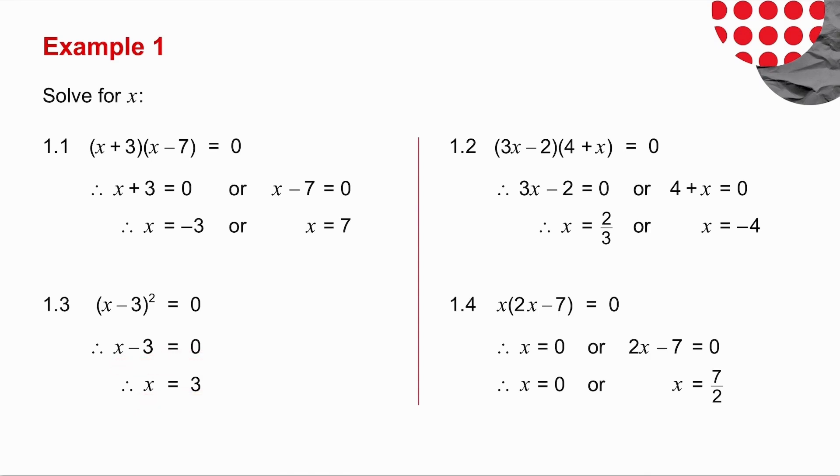In 1.4, it looks different in that I don't have two brackets, but I still have x times a bracket. And how do I get the product of two factors to equal 0? One of them must be equal to 0. So either x is equal to 0, or 2x minus 7 must be equal to 0. So my answers are x is 0, or x is equal to 7 over 2.